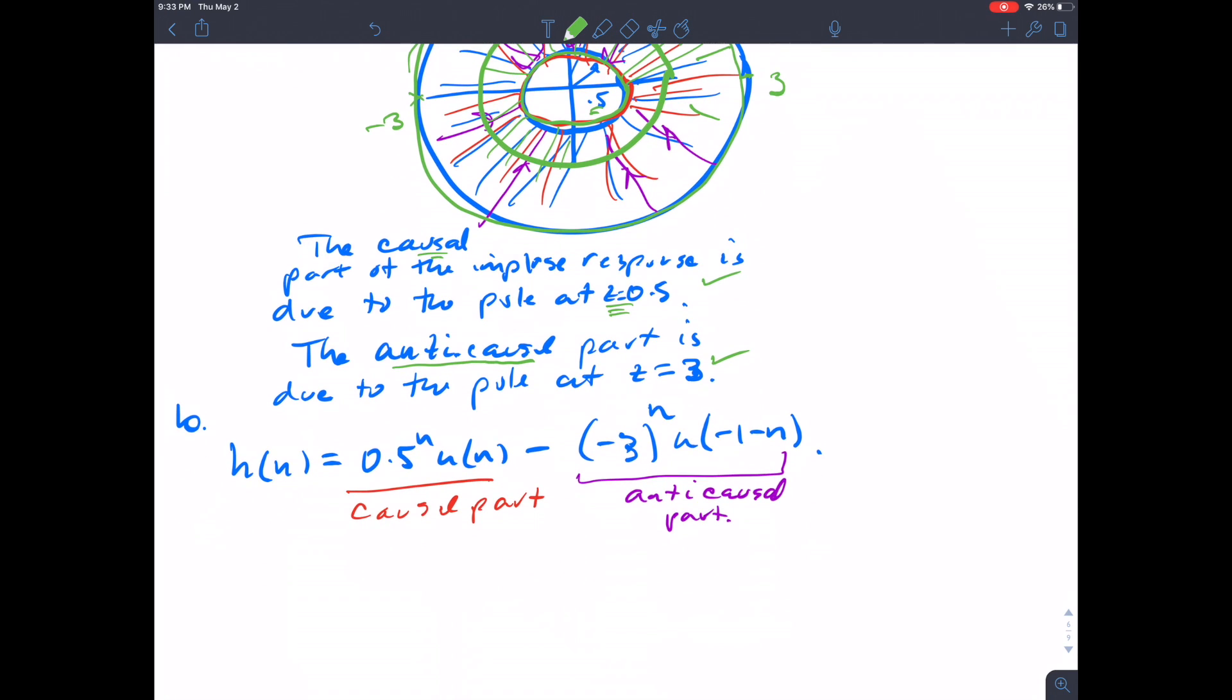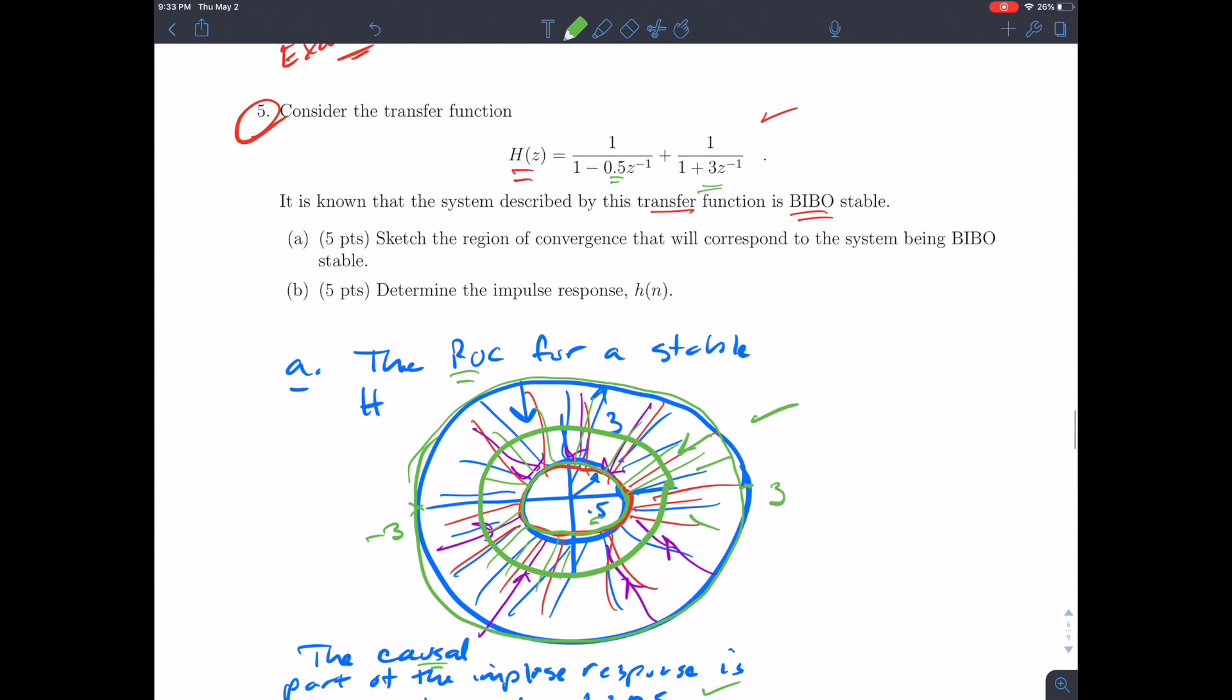So from there, we know the Z-transform pins down the response. Once you have the region of convergence, that tells you whether it's a causal response or a non-causal response. We know the 0.5 pole is causal, so we get this expression. And we know the pole at minus 3 is anti-causal, so we get this expression. So there you have it, the solution to problem 5.